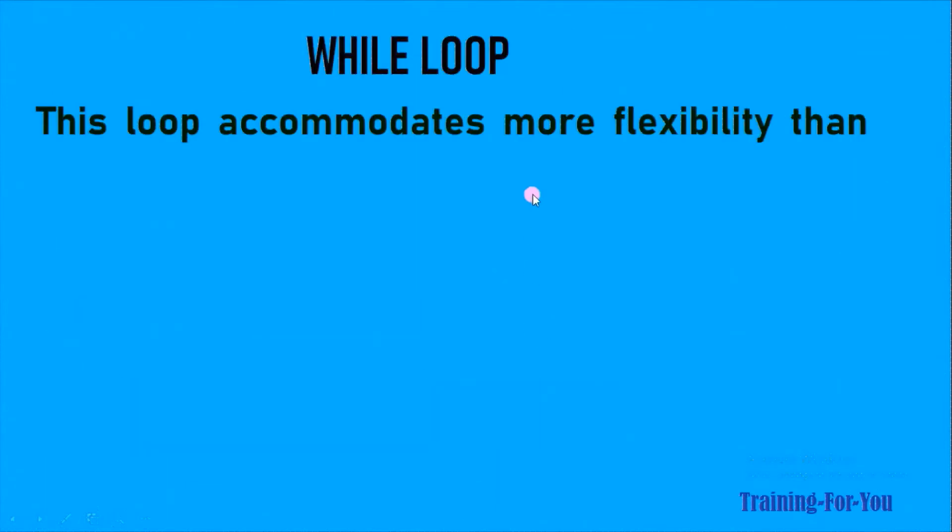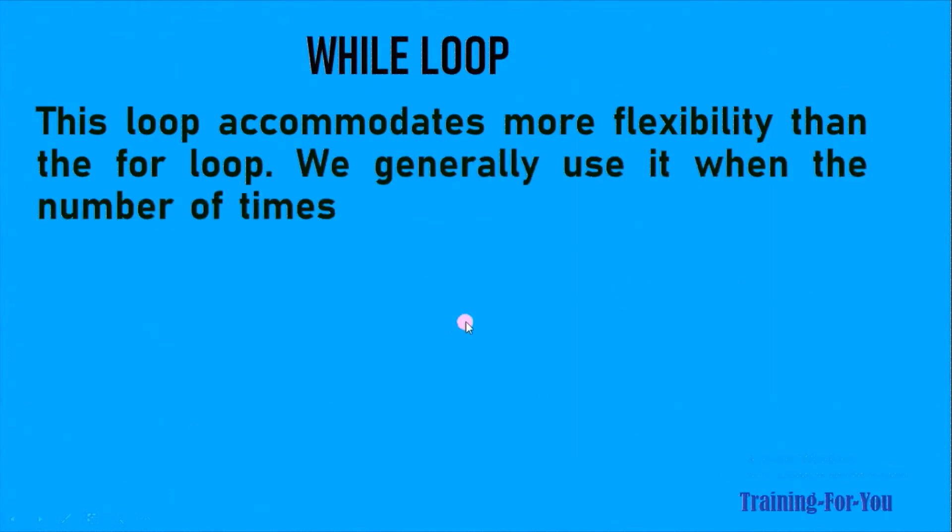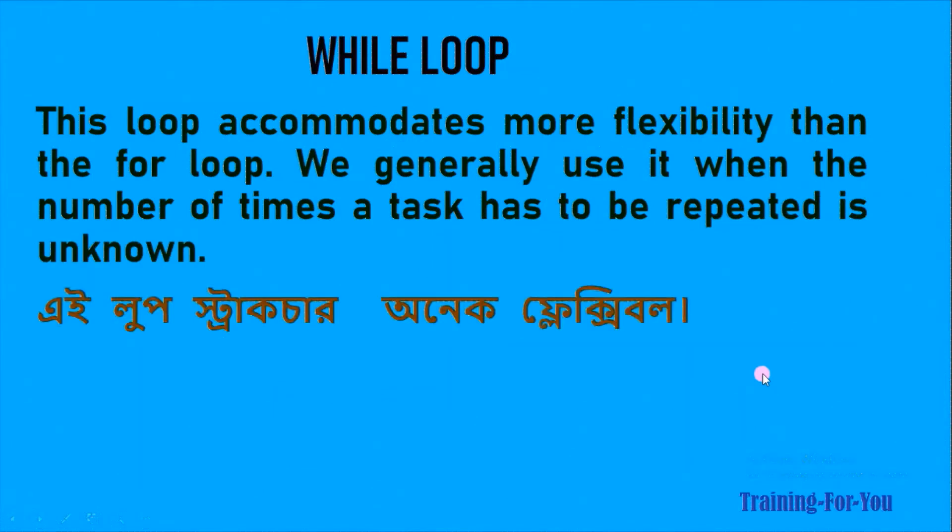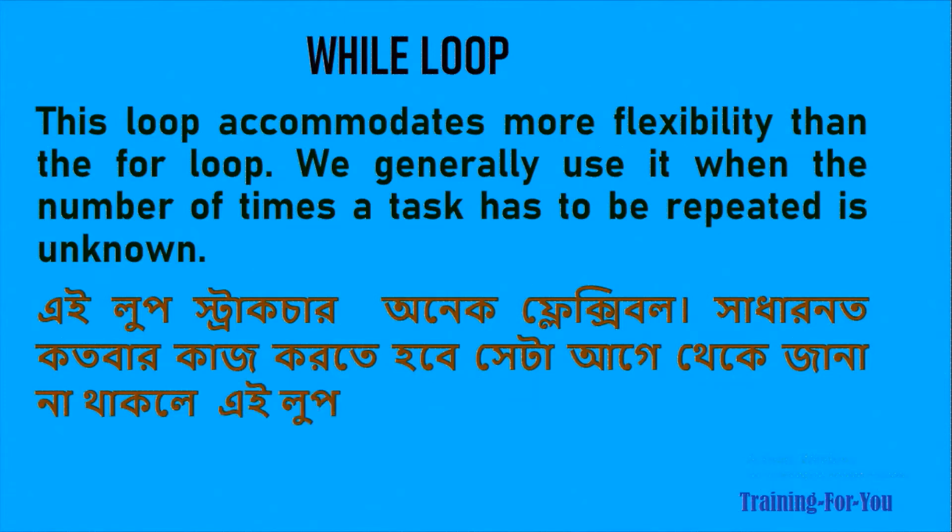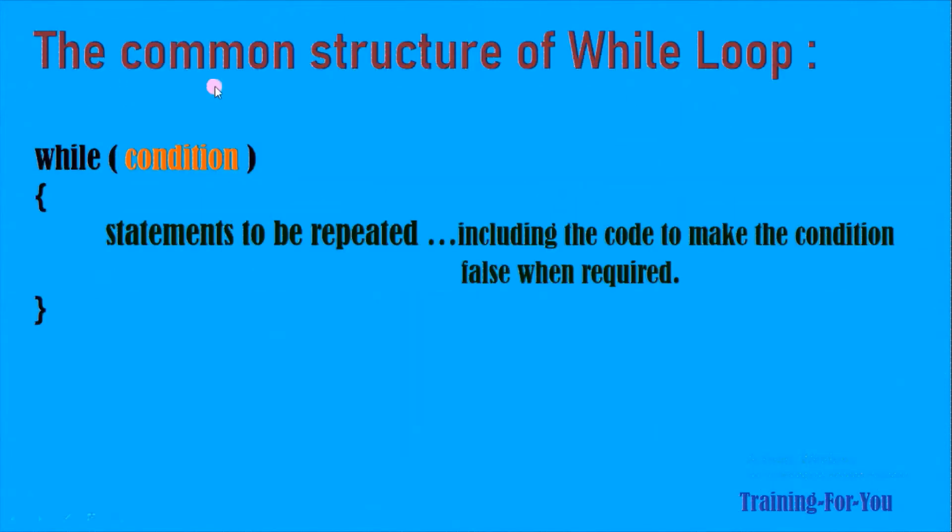While loop: this loop accommodates more flexibility than the for loop. We generally use it when the number of times a task has to be repeated is unknown. The common structure of while loop: the keyword while is followed by the condition in parenthesis.